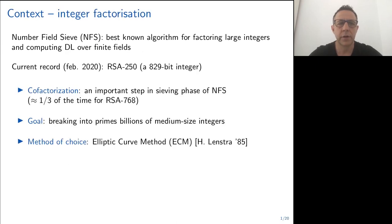The context of this talk is integer factorization. As you may know, the best known algorithm when you want to factor a very big integer is the number field sieve. The current record from February 2020 is a 250 digit RSA number that was factored using the open source software CADO-NFS.